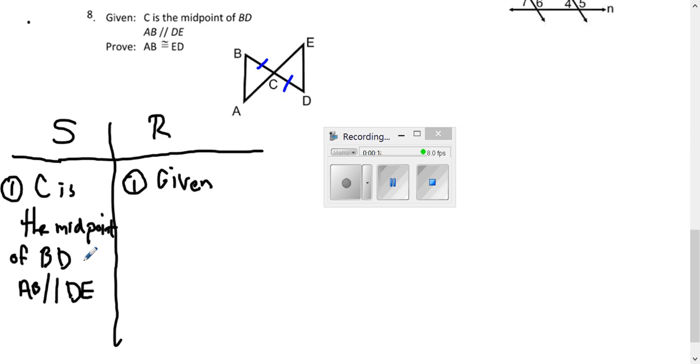I'm going to point out that because C is the midpoint, we only know that BC and CD are congruent. We don't know that AC is congruent to CE. What else do we know? We know that these two angles are congruent because they're vertical angles, and they tell us that the sides are parallel.